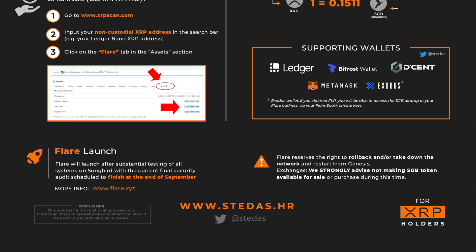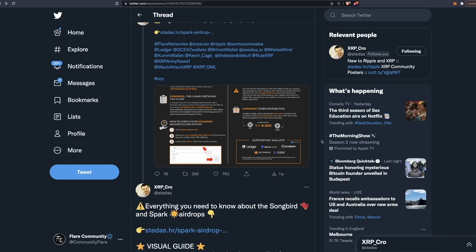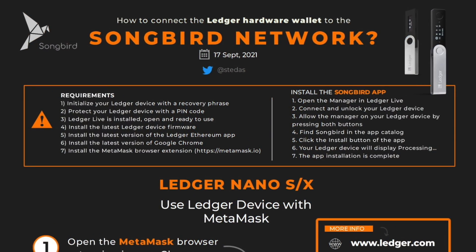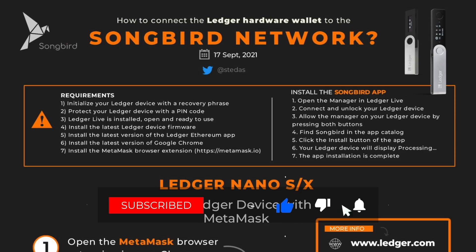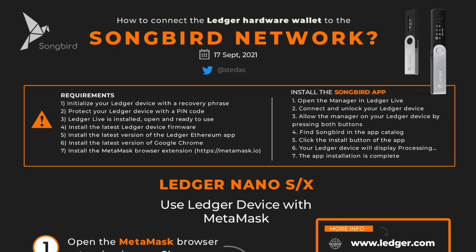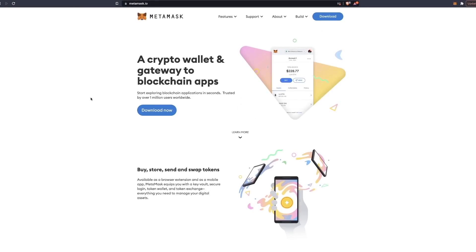Now let's look at how you can connect your self-custody wallet to the Songbird network. This walkthrough covers the process for a Ledger device, but you can do this with any device you can hook up to MetaMask. There are a couple of prerequisites: you'll need a Ledger device set up with your PIN code and Ledger Live installed, all firmware up to date, and you'll also need the MetaMask browser extension. MetaMask is a web-based wallet that allows you to connect to various applications and link different hardware wallet accounts.